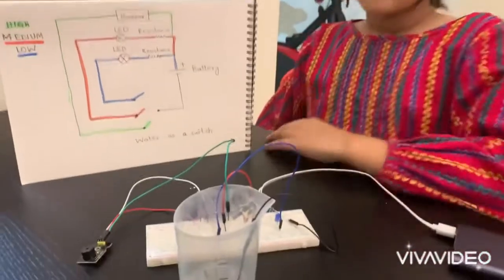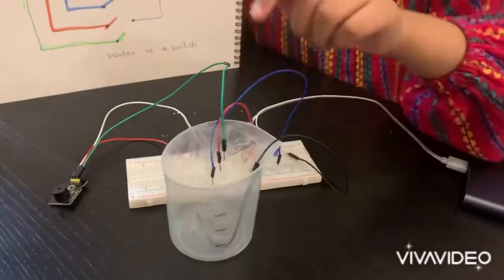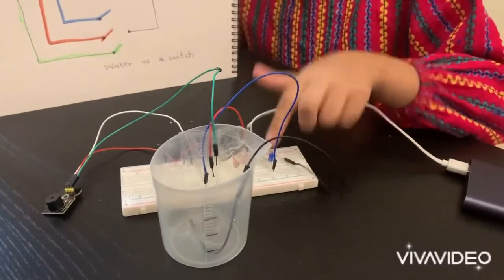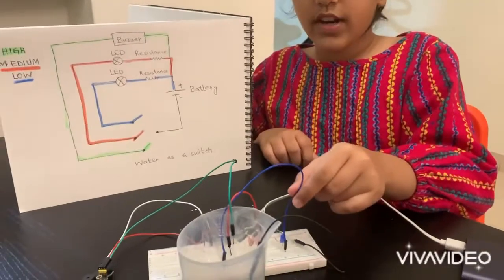When we pour water until the first level, the ground of the battery and the ground of the blue LED become connected. This circuit is complete.